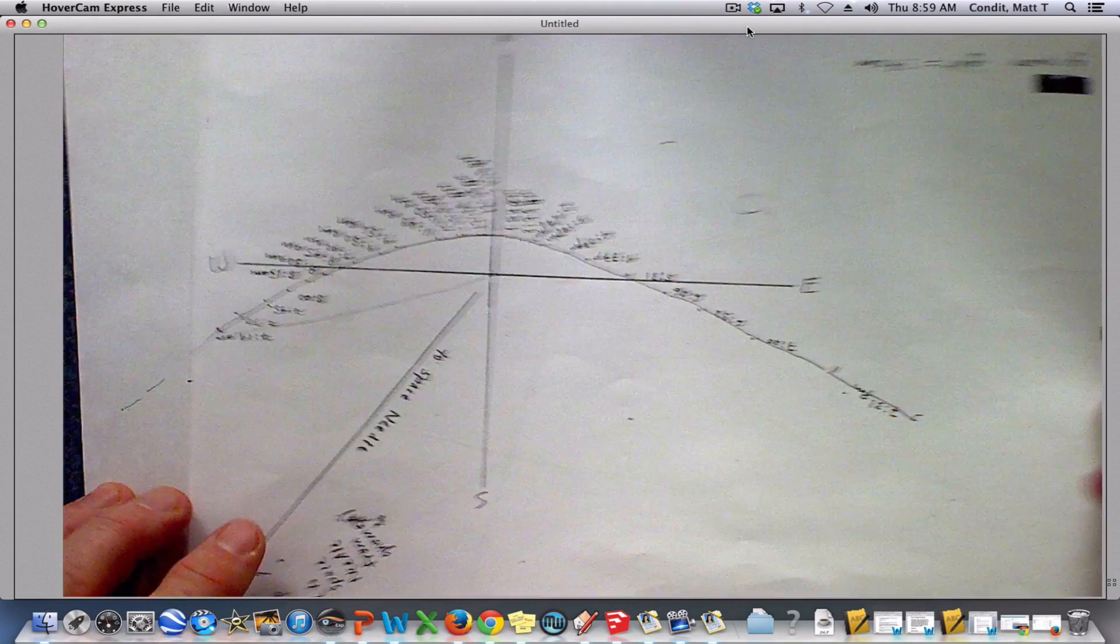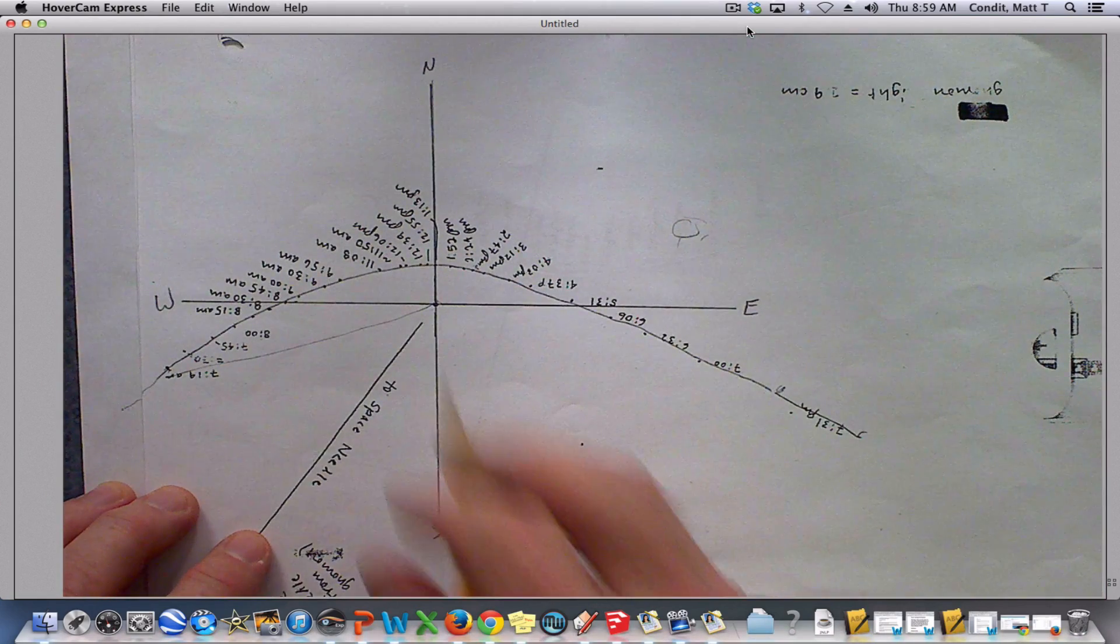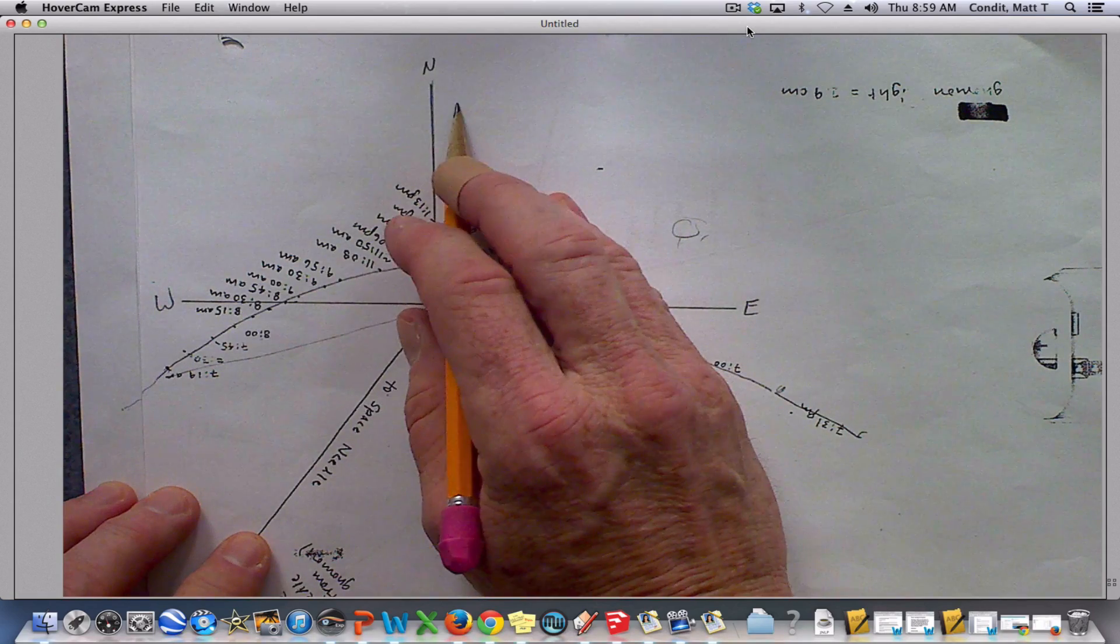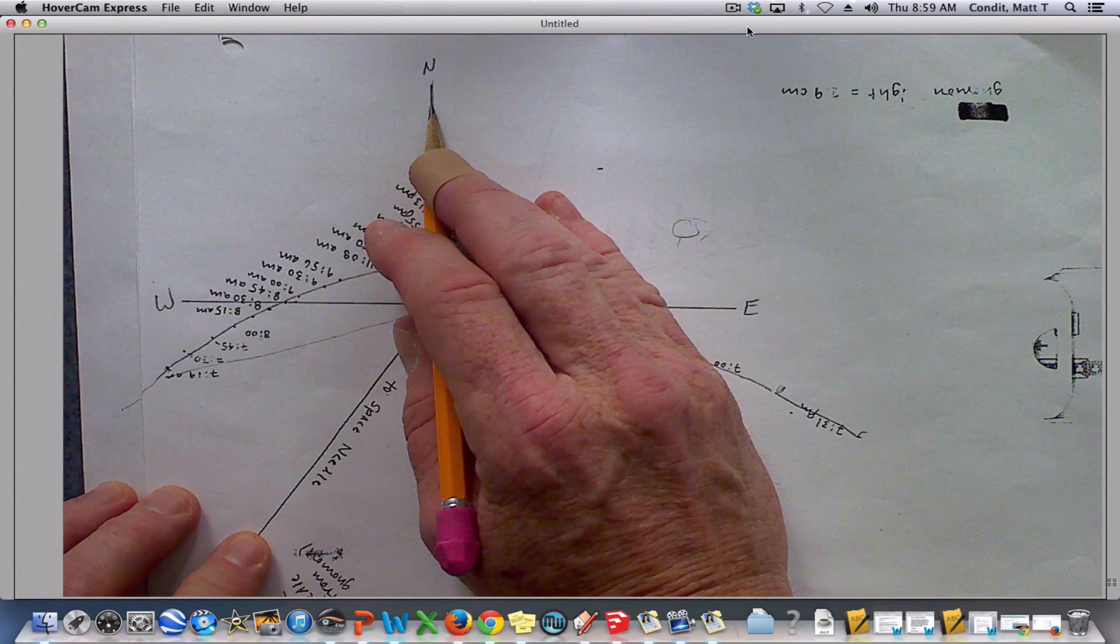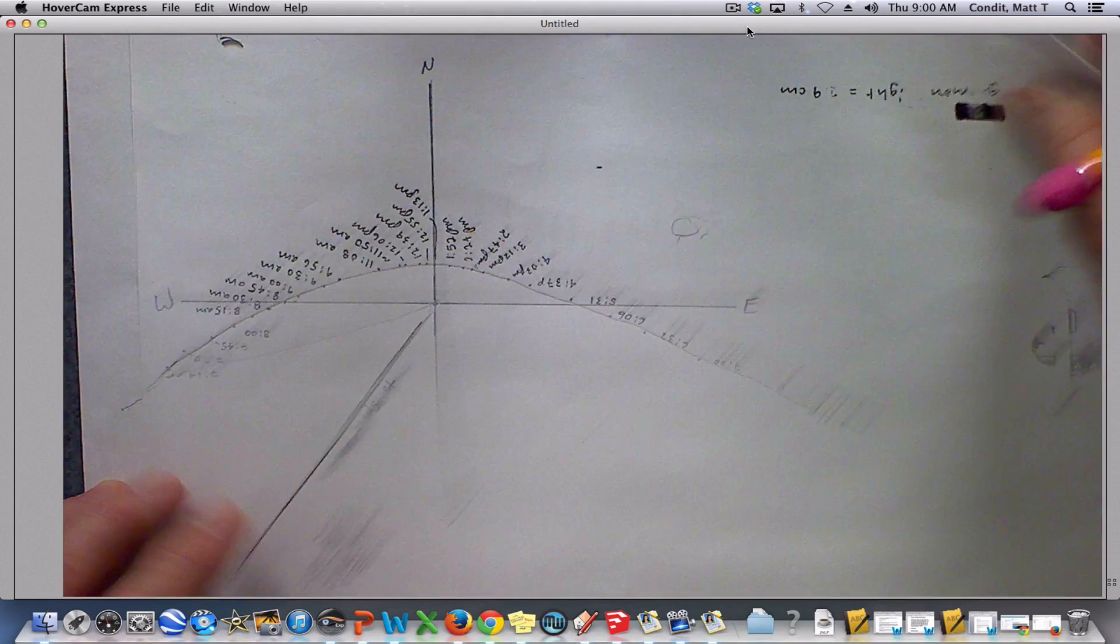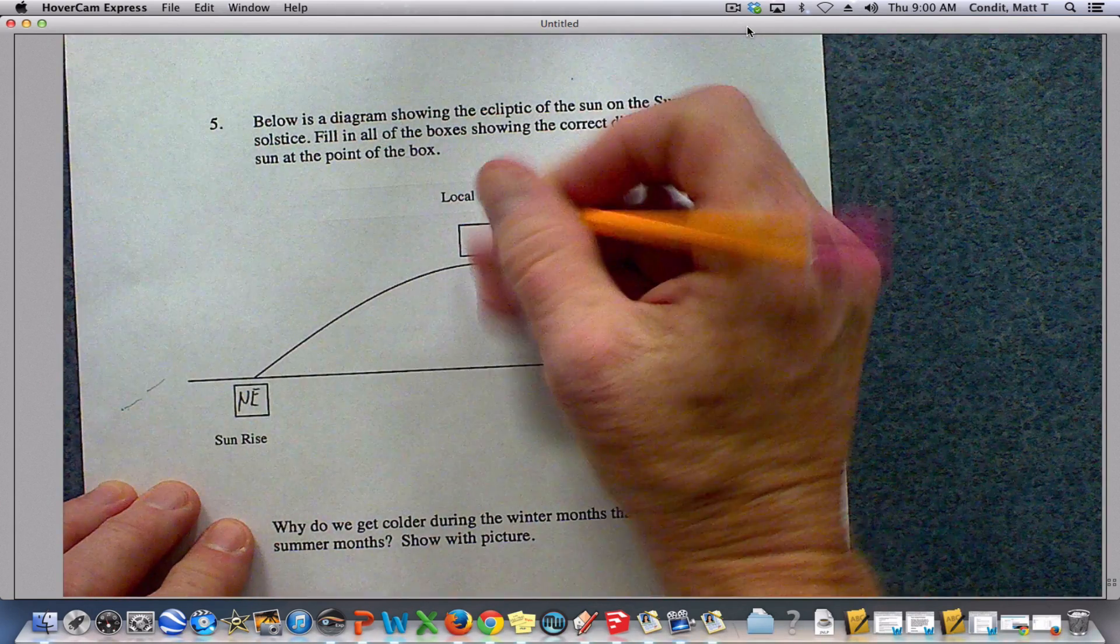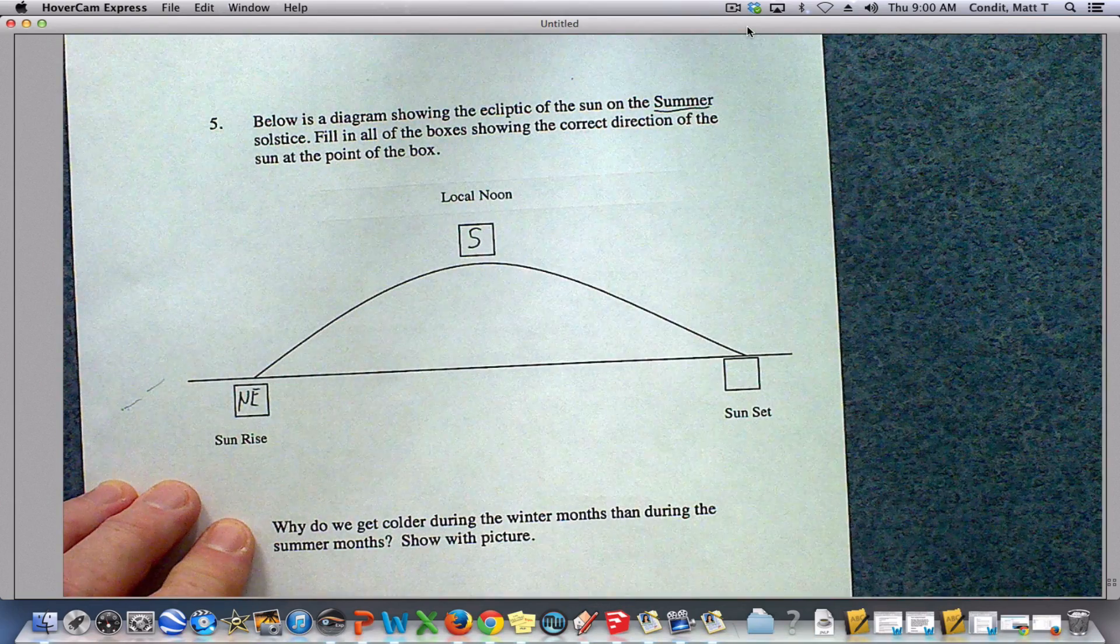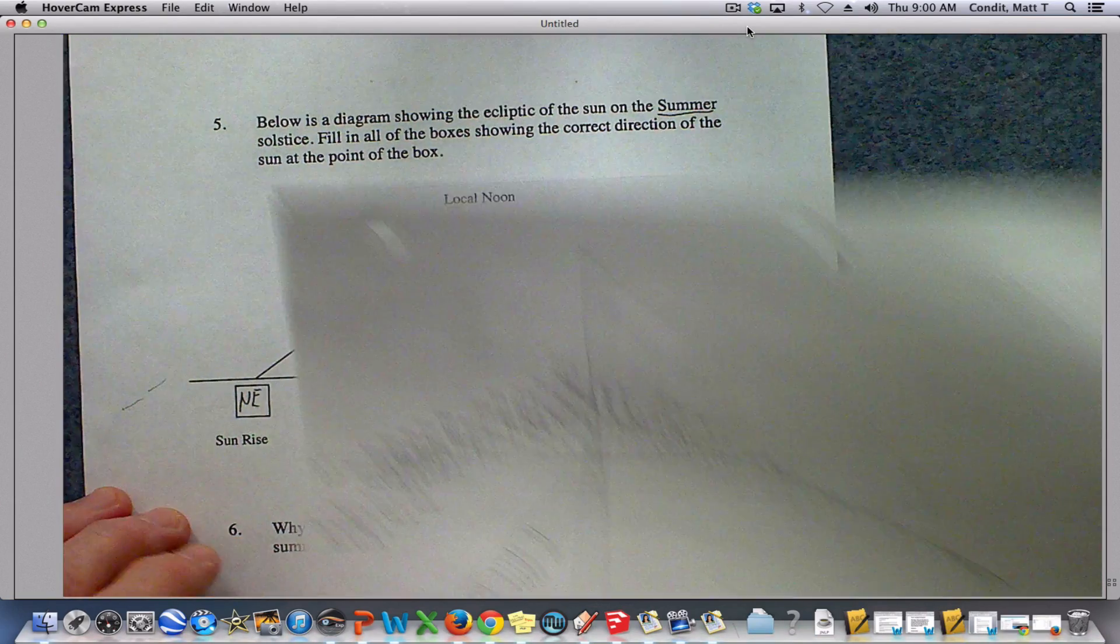Now, local noon, we know the shadow at local noon always points north, no matter what season we're in or where we're at on the earth, which means the sun at local noon is always directly south. That doesn't change on any shadow plot.